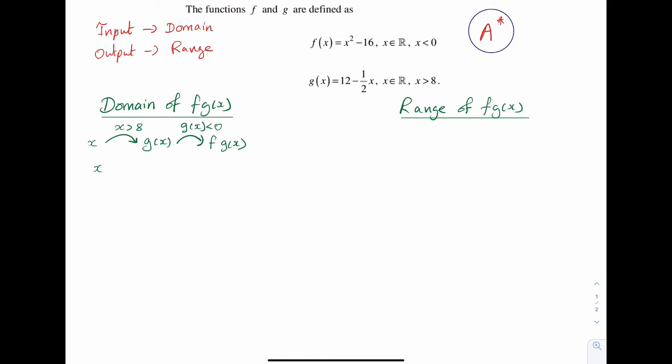So x has to be greater than 8 and g(x) has to be less than 0. Now g(x) is 12 minus a half x which has to be less than 0. I can go ahead and solve this particular inequality. So the first step will give me minus a half x is less than minus 12. Therefore x has to be bigger than 24.